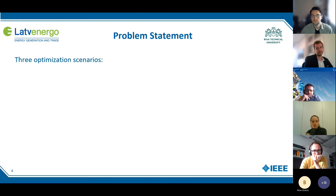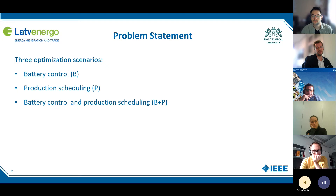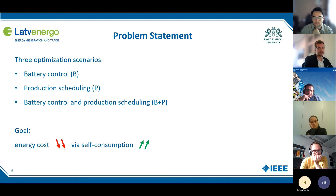These flexibilities result in three optimization scenarios: the first one is battery control, the second one is production scheduling, and the third one combines both battery control and production scheduling. The goal is always to decrease the energy costs by increasing the self-consumption and increasing the system efficiency.